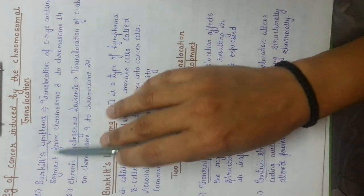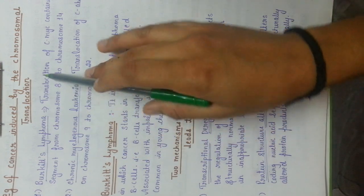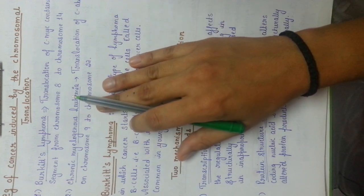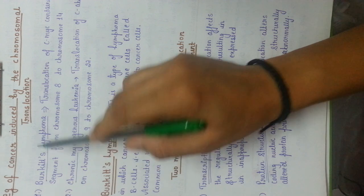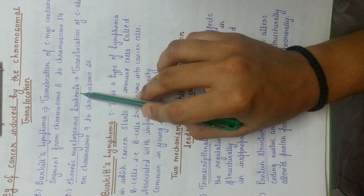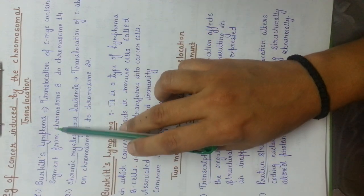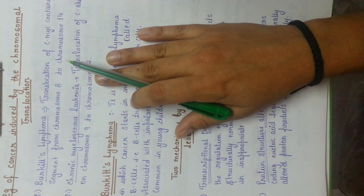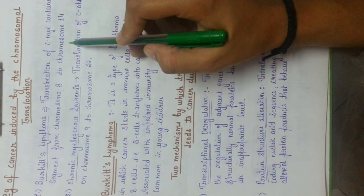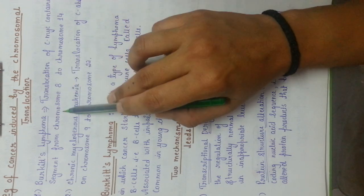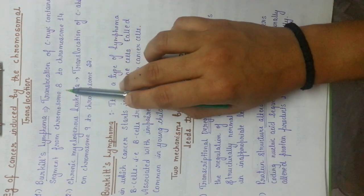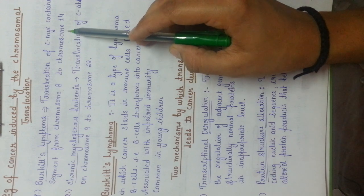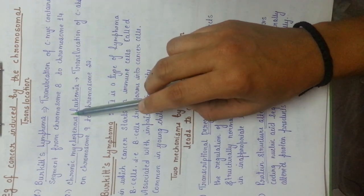Moving on, there are certain examples of cancers generally induced by chromosomal translocation. We are going to discuss two types: Burkitt's lymphoma and chronic myelogenous leukemia. In Burkitt's lymphoma, translocation occurs between chromosome number 8 and chromosome number 14. The C-myc gene present on chromosome 8 will be detached and rearranged or transferred to chromosome 14, leading to Burkitt's lymphoma.